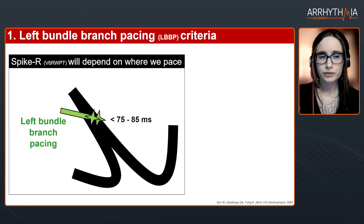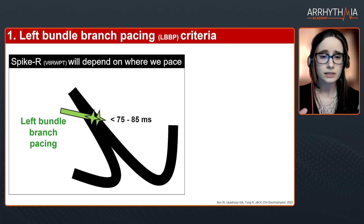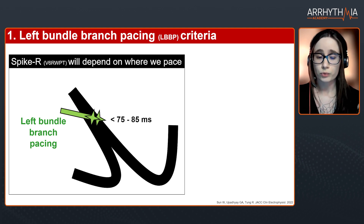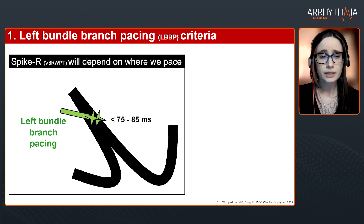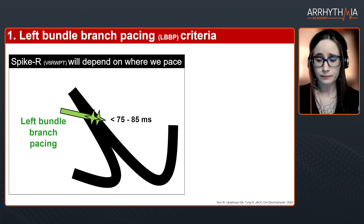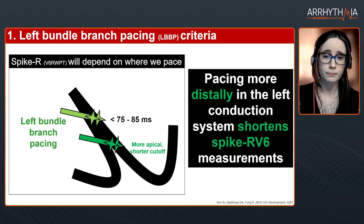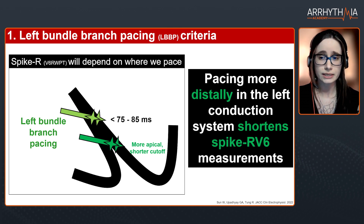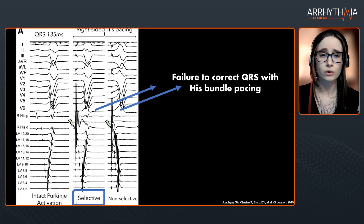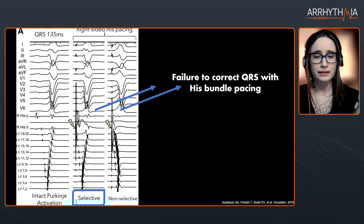The first pitfall is that the spike-to-V6 interval criterion depends on where we pace. If we are pacing distally in the conduction system, the interval will be shorter because we are closer to the myocardial mass. Sometimes we will have to apply a shorter threshold for our patients if we are pacing more distally in the conduction system.